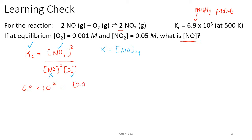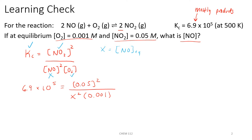That's equal to our NO₂ concentration, which is 0.05 molar squared, over X squared times O₂ concentration, which is 0.001 molar at equilibrium. We can plug in the concentrations that were given because we were told they were equilibrium concentrations. When they were non-equilibrium concentrations, we were calculating Q. But when our mass action expressions equal K sub C, those are equilibrium concentrations.